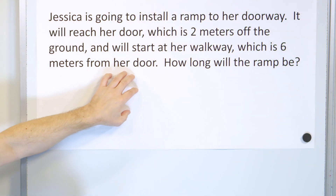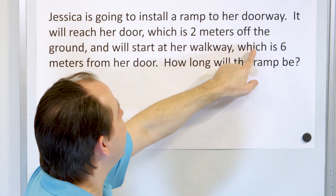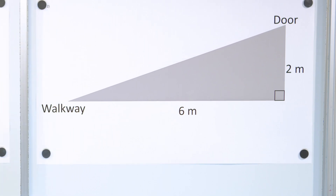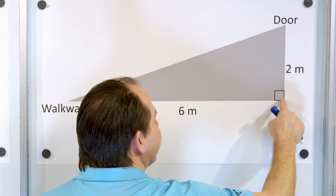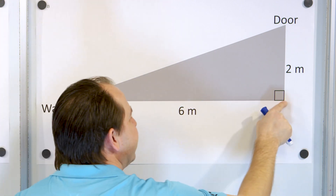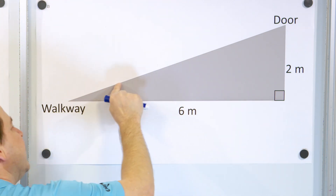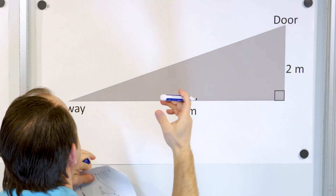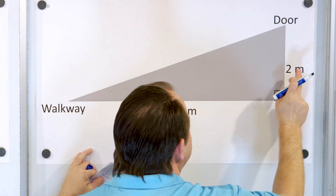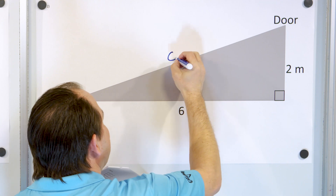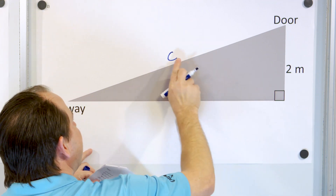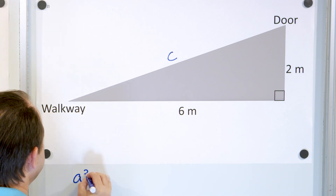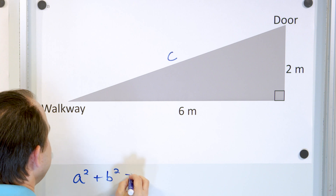Let's draw a picture. The door is 2 meters off the ground, and we're starting the ramp 6 meters from the doorstep. We have an elevated door 2 meters off the ground, and we're building this ramp starting 6 meters away. What we're trying to find is the slanted length — how long the ramp will be. The longest side — the hypotenuse opposite the 90-degree angle — we call that c.